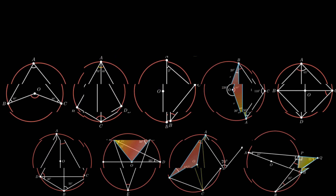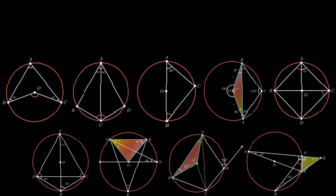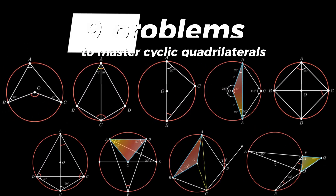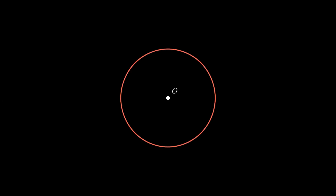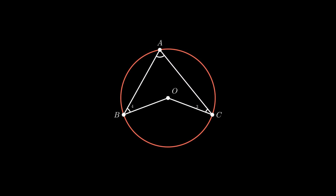Welcome to another video related to problems based on theorems related to circles. Let's continue with the first one. Consider a circle with center O. A, B and C are points on the circle such that angle ABO equals 40 degrees and angle ACO equals 30 degrees. We need to find the value of angle BOC.